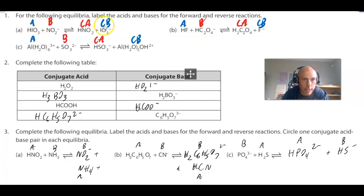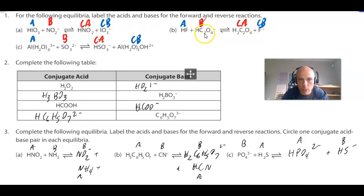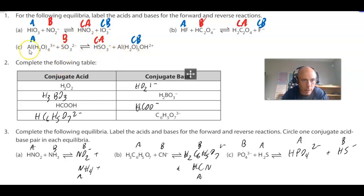For practice Q1: HIO3 is the acid; its conjugate base is IO3⁻. NO2⁻ is the base; HNO2 is the conjugate acid. HF is the acid and F⁻ is the base. HC2O4⁻ is the base; here's our conjugate acid. There's the acid and there's the base, with HCN as the conjugate acid of the base and F⁻ as the conjugate base of the original acid.